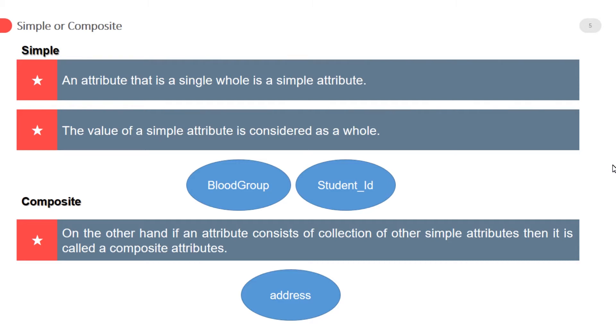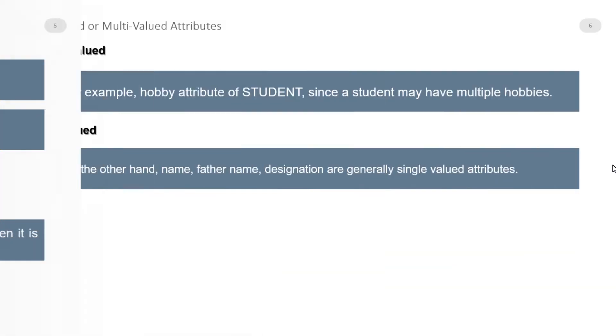Composite attribute: on the other hand, if an attribute consists of a collection of other simple attributes, then it is called a composite attribute. For example, student address attribute may comprise of house number, street number, area code, and the city. In this case, student address will be a composite attribute. So we can say that composite is a combination of simple attributes.